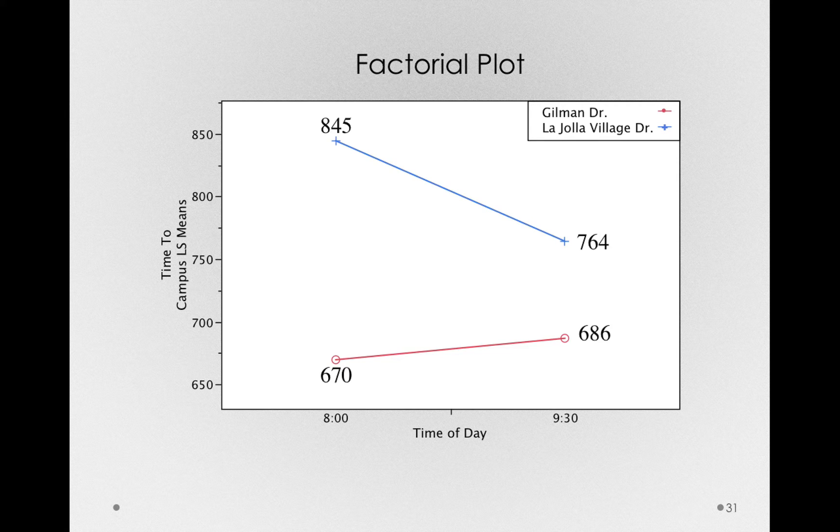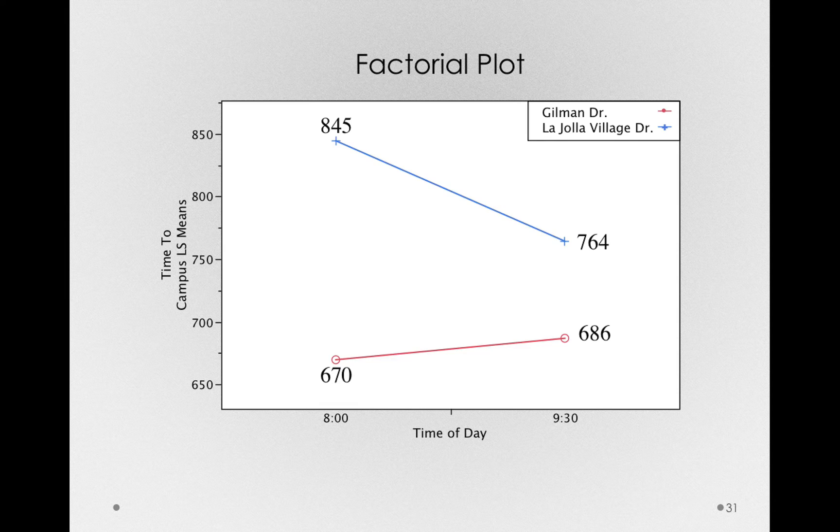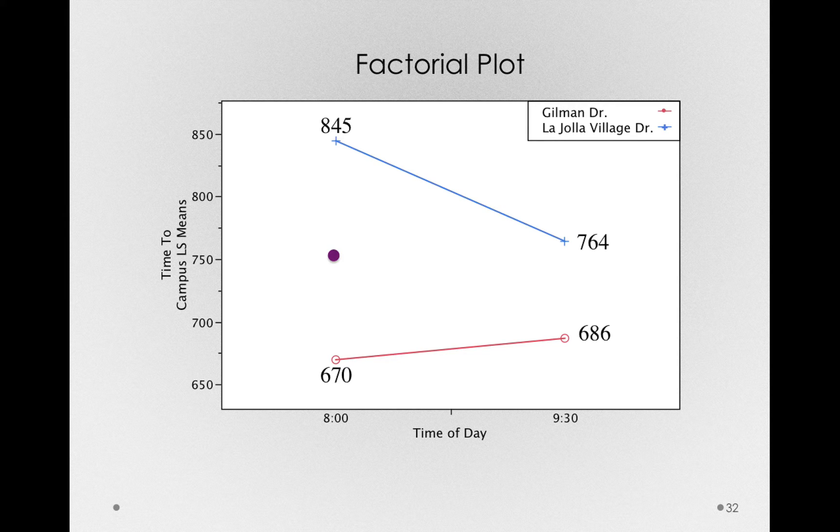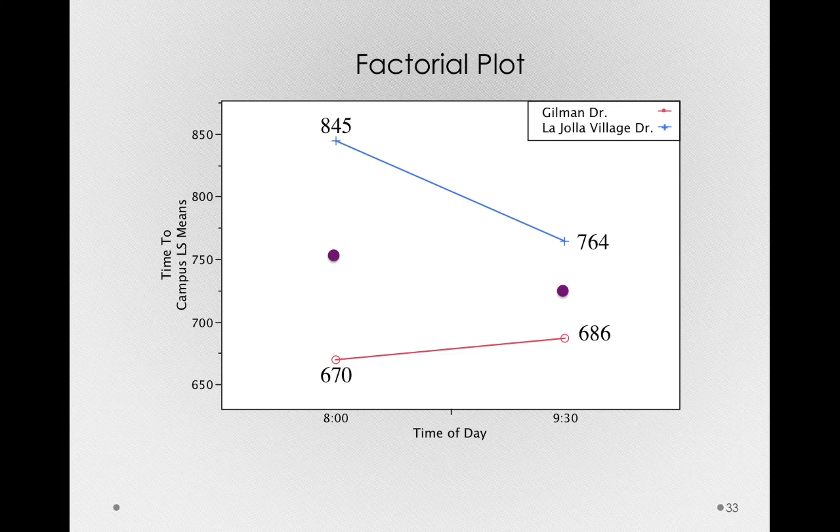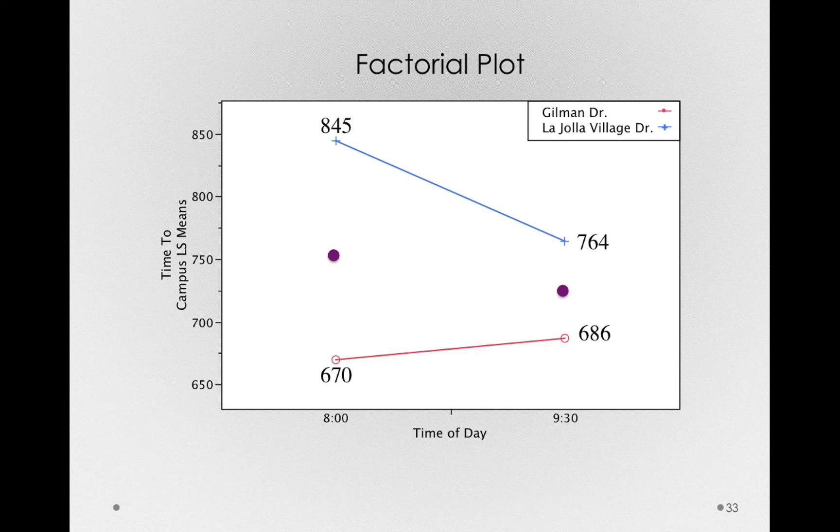In this case, that's ignoring the separate lines. So what we're really doing is looking at what the overall time duration is at 8 a.m. There it is, the midpoint between the two different routes at 8 a.m. And the overall time it took to get to campus at 9:30. That's just the midpoint between those two lines at 9:30.